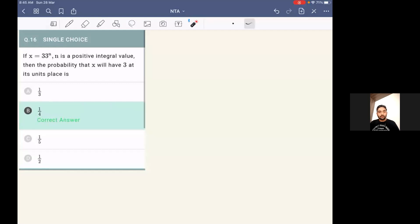So we can see the next question on the screen. The question is, if x is equal to 33 power n, where n is a positive integer, then the probability that x will have 3 at its unit place is.